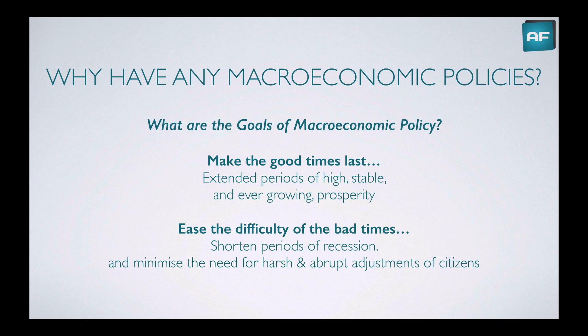So what are the goals of macroeconomic policy? In colloquial terms, we just want to try and make the good times last — we want extended periods of high, stable, and ever-growing prosperity. And on the flip side, we want to ease the difficulty of the bad times. We want to shorten periods of recession and minimize the need for harsh and abrupt adjustments for citizens. We want soft landings, because when we have to do things major and very quickly, it's very hard for the population to adjust and causes a lot of friction and unhappiness.